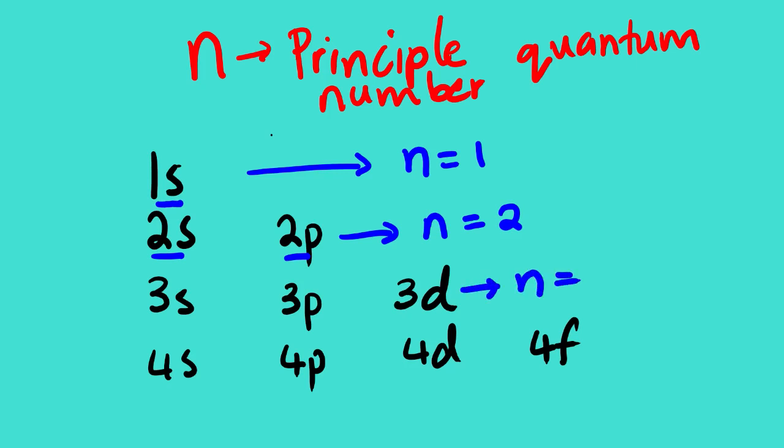The third energy level consists of three types of orbitals: 3S, 3P, and 3D. Then N equals 4 is the fourth energy level. So the principal quantum number simply describes the energy levels. Energy level 1 has one orbital, level 2 has two orbitals, level 3 has three orbitals, level 4 has four orbitals — meaning energy level 5 would have five orbitals.